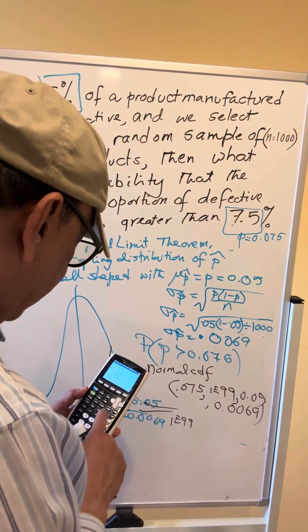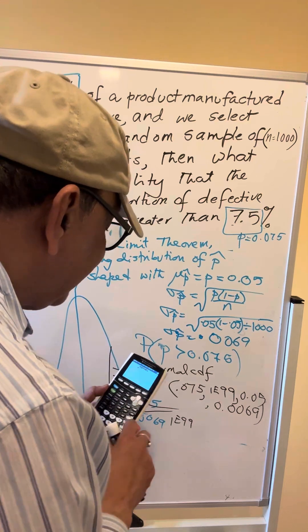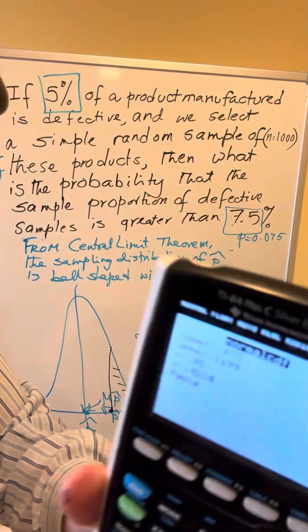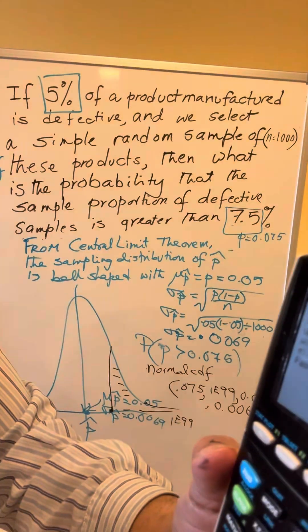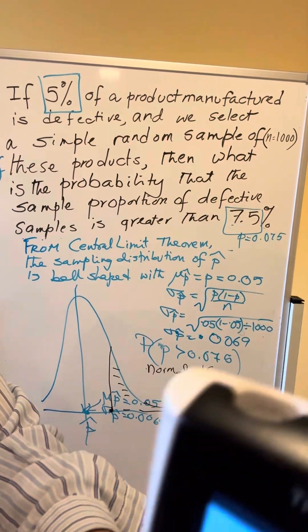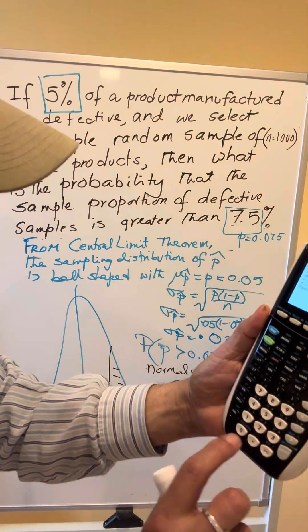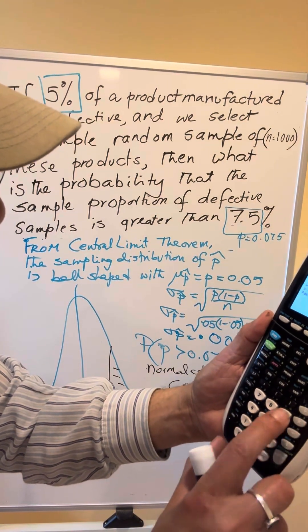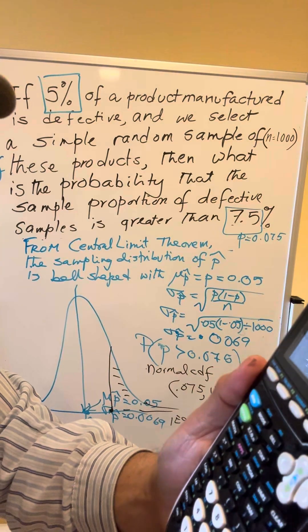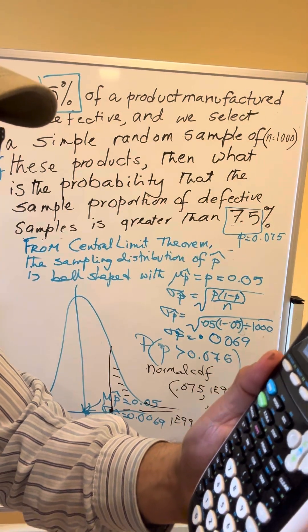So let's quickly do this calculation using TI-84. So 2nd verse 2 is normal CDF using my calculator. My lower is 0.075, my upper is 1E99, my mean is 0.05, my standard deviation is 0.0069. Then I go to paste, hit enter, and enter.